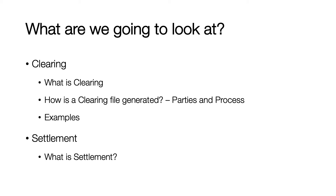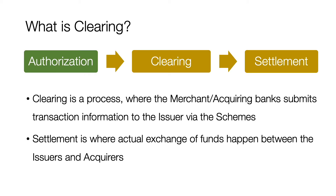In the last video we looked at authorizations and what dual messaging system means. We discussed that in the authorization step the merchant only takes an authorization from the issuer to proceed with the transaction, and at the issuer end the funds are actually put on hold. Now let's look at what clearing and settlement mean.